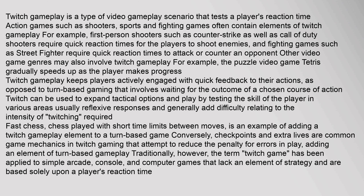Twitch can be used to expand tactical options and play by testing the skill of the player in various areas, usually reflexive responses, and generally adds difficulty relating to the intensity of twitching required. Fast chess, chess played with short time limits between moves, is an example of adding a Twitch gameplay element to a turn-based game. Conversely, checkpoints and extra lives are common game mechanics in Twitch gaming that attempt to reduce the penalty for errors in play, adding an element of turn-based gameplay.